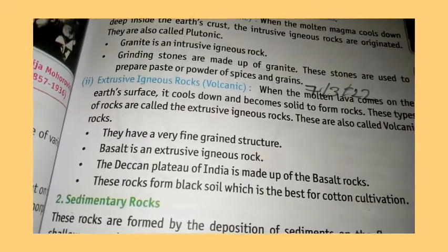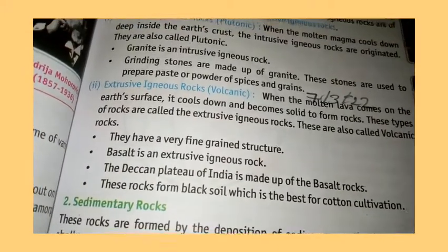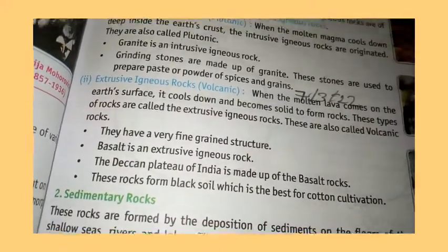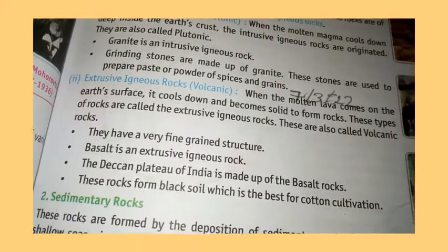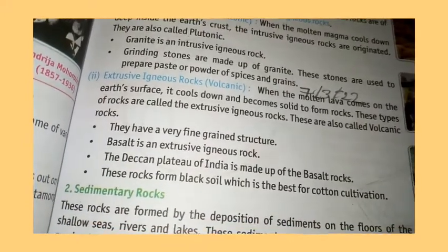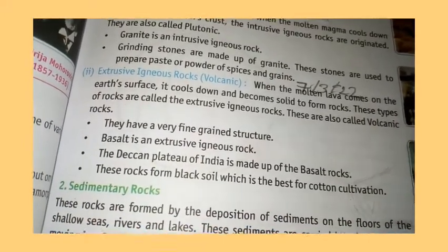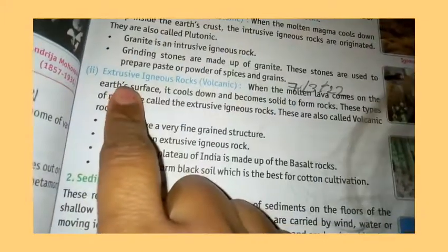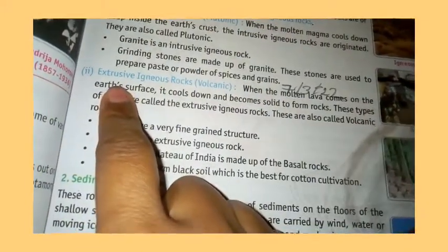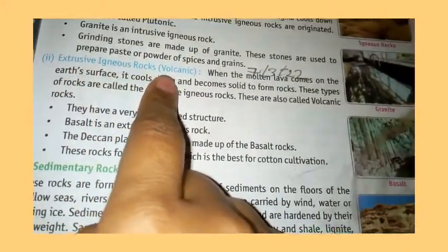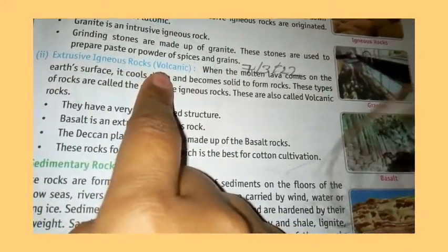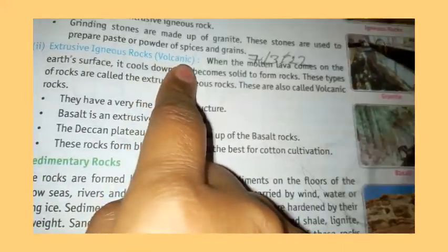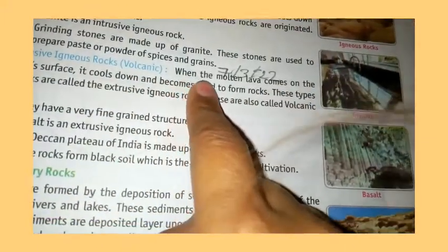Today we will continue our chapter 11. In chapter 11 we were studying about igneous rock. Today we will read our second type of igneous rock: extrusive igneous rock. Its other name is volcanic rock.